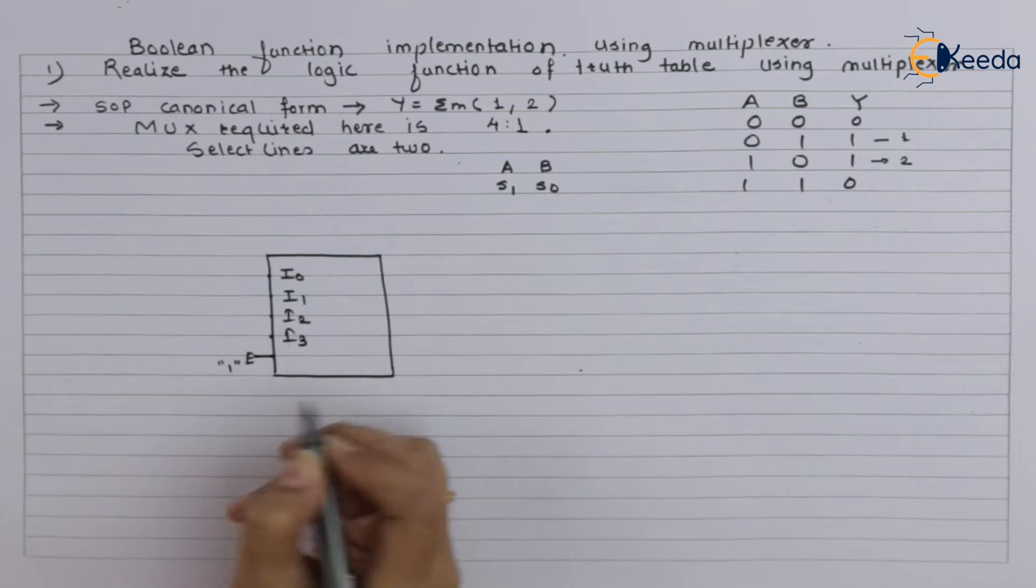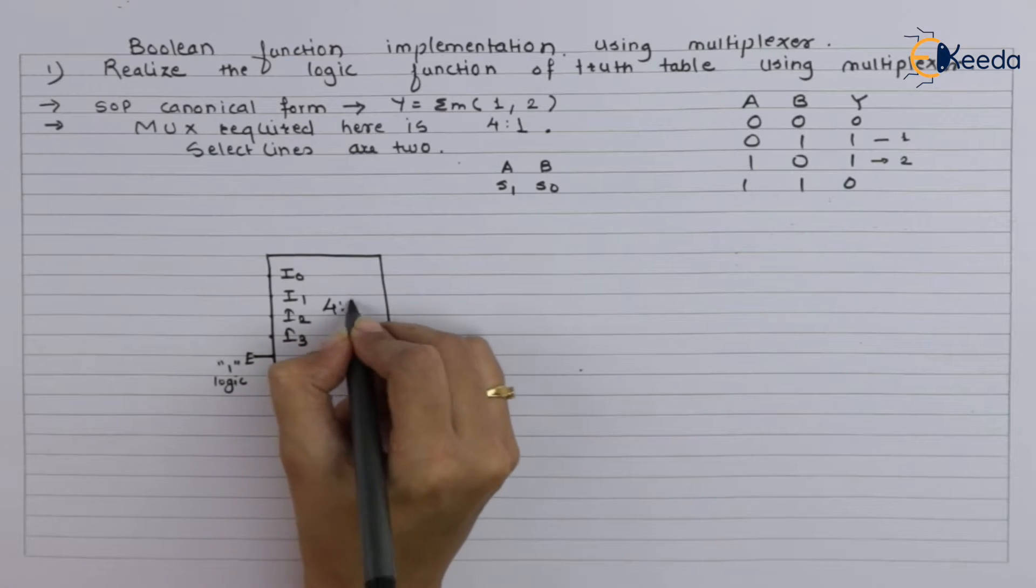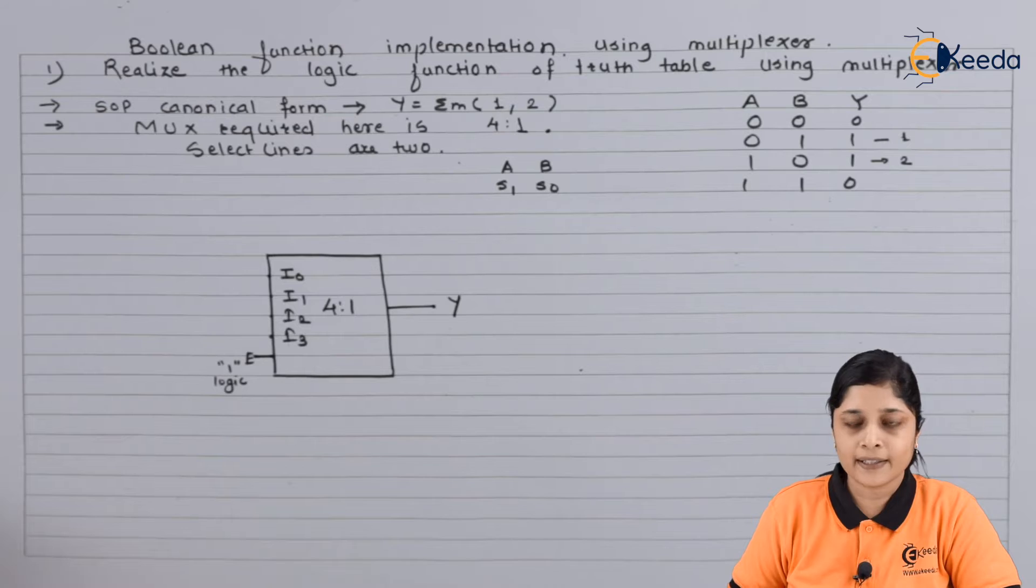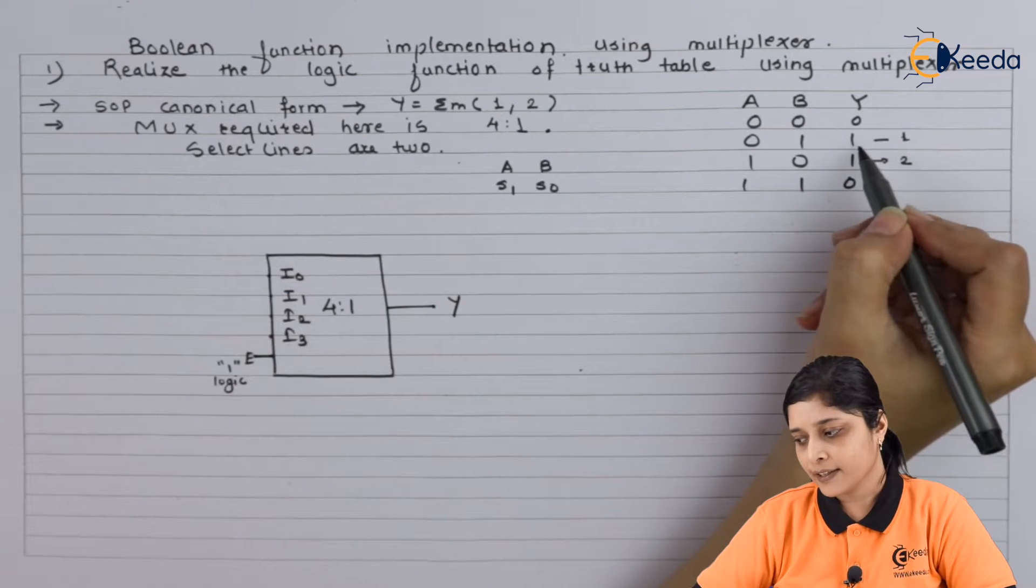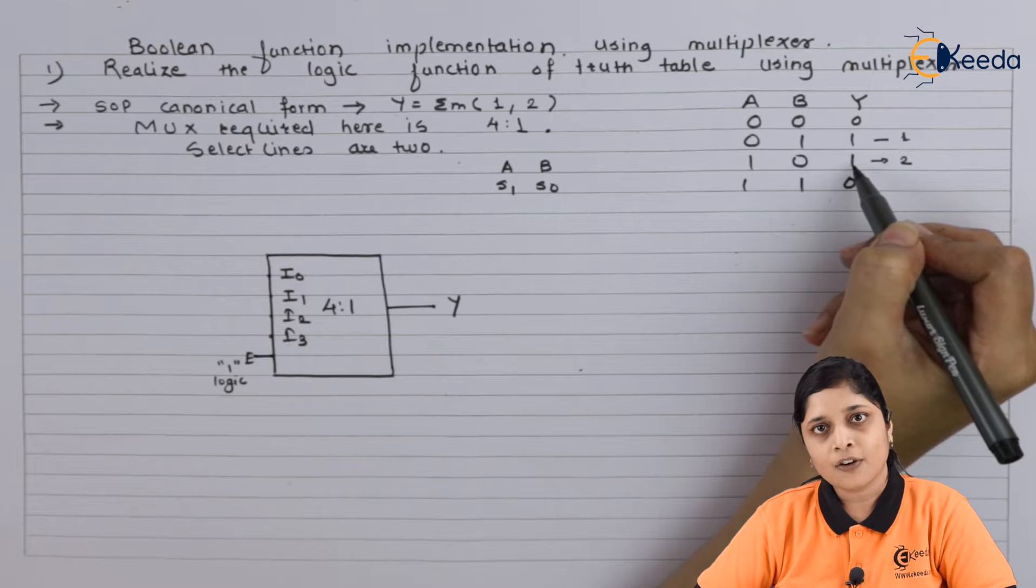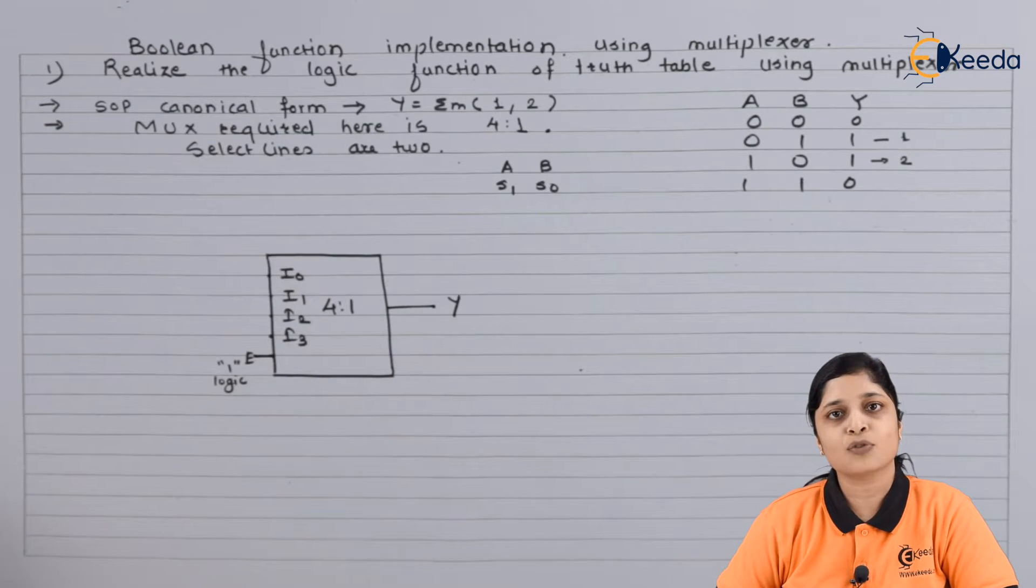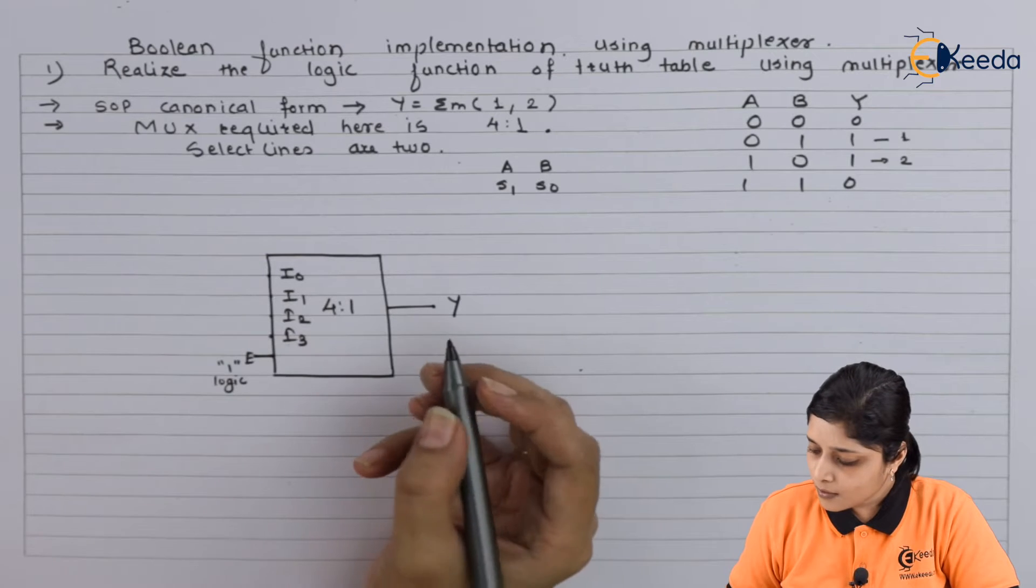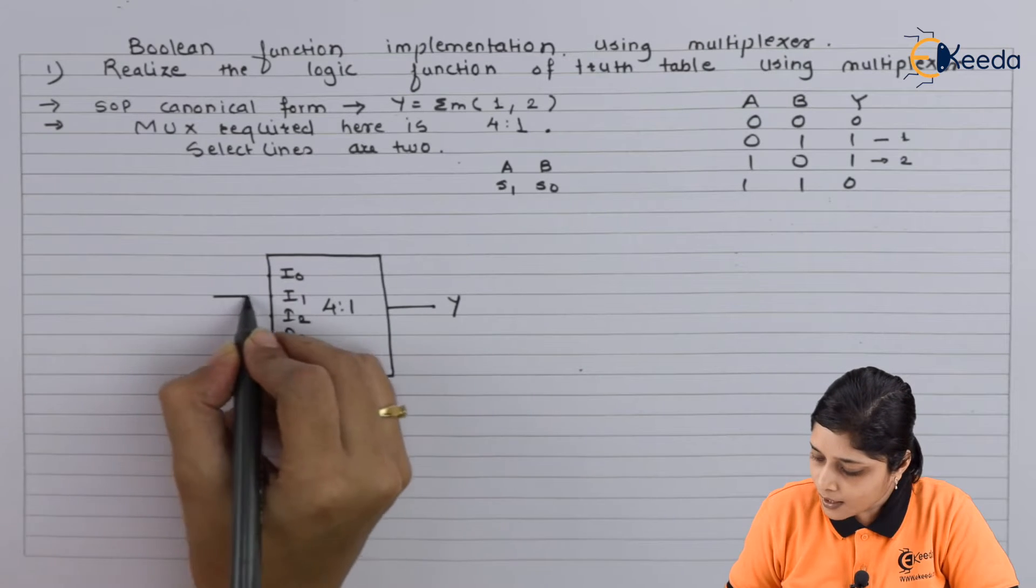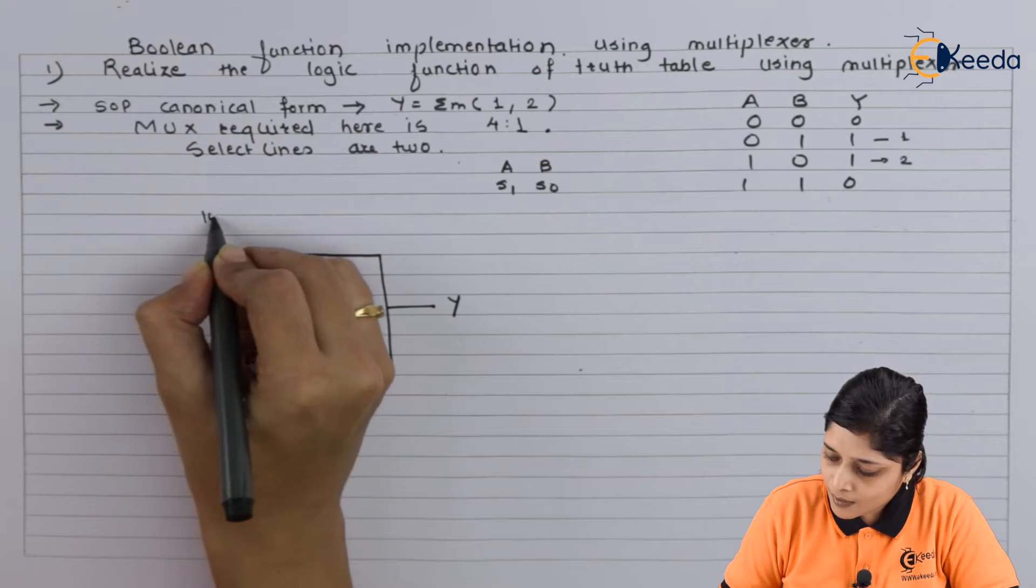This is logic one, this is four is to one mux, output here is y. Now connect the ones lines of column y to logic one and remaining terms to logic zero. So we have i1 and i2 for logic one.